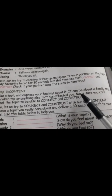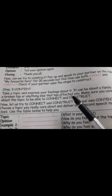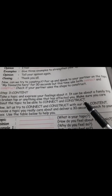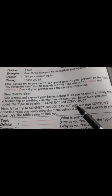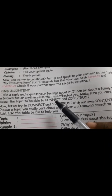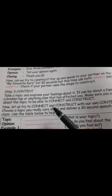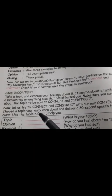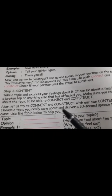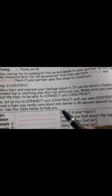Content is the main thing — you have to make the content. Take a topic and express your feeling about it. It can be about a family trip, a broken tab, or anything else that has affected you. Make sure you care about the topic so you are able to Connect and Construct. Let us try to Connect and Construct with your own content — choose a topic you really care about.